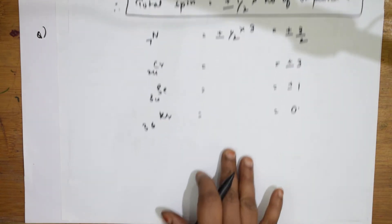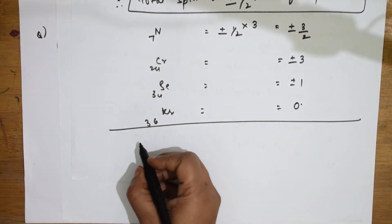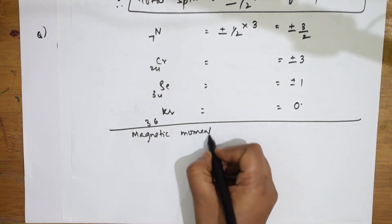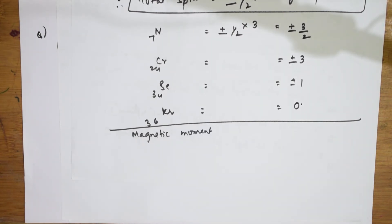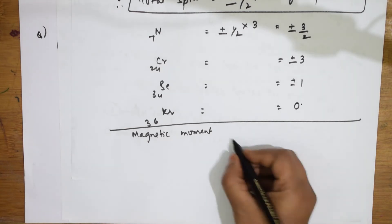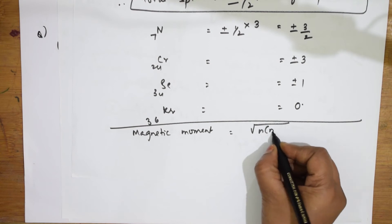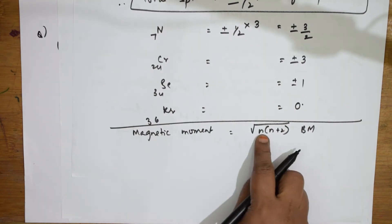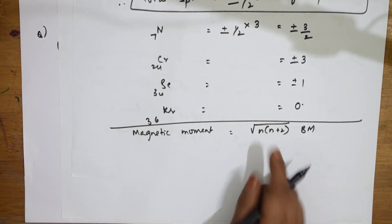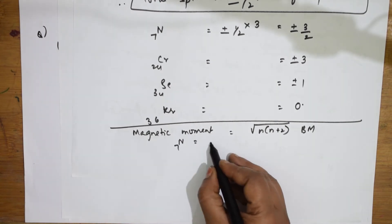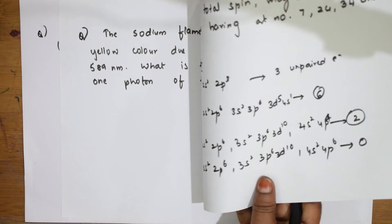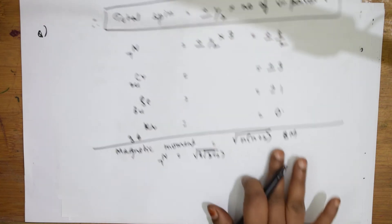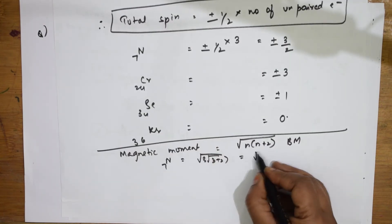Now to calculate magnetic moment using the formula μ = √(n(n+2)) Bohr magnetons, where n is the number of unpaired electrons. For nitrogen (n=3): μ = √(3×5) = √15 BM.